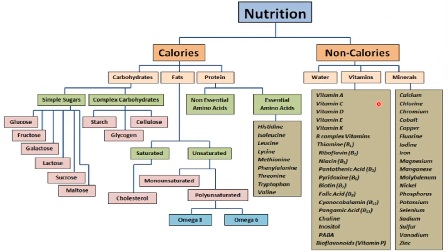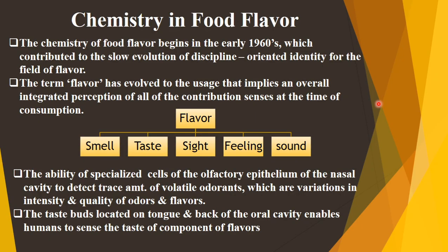In this subject we are going to learn first about the chemistry of food flavor. The chemistry of food flavor began in the early 1990s, which contributed to the slow evolution of this discipline.